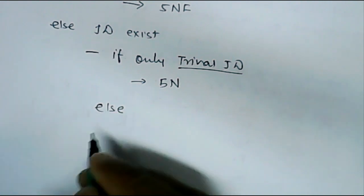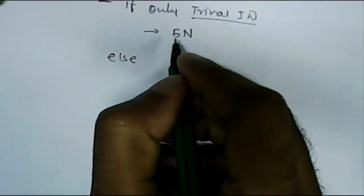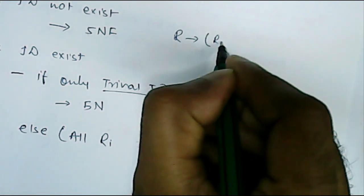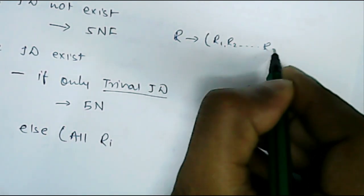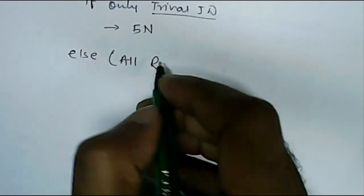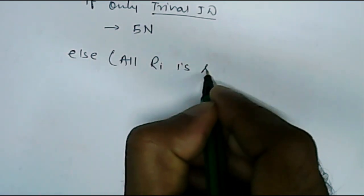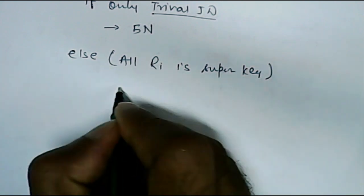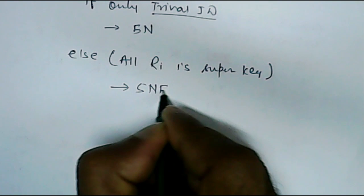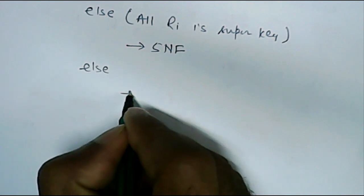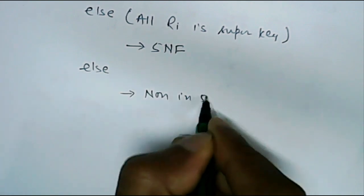Else if all the Ri are super key - what is Ri? Ri is when we are breaking R into R1, R2, and so on Rn. This is one of the Ri. So if all Ri are super key, then this will be in fifth normal form. Else it will not be in fifth normal form.